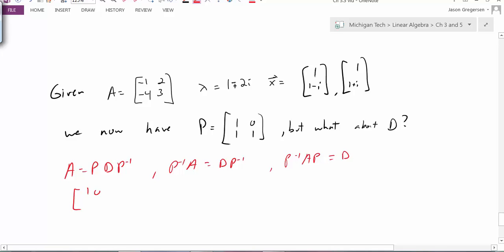My matrix P was 1, 0, negative 1, 1. My matrix A is negative 1, 2, negative 4, and 3. The inverse matrix is going to turn out to be 1, 0, 1, 1.